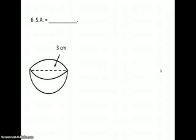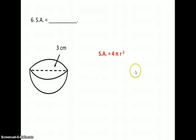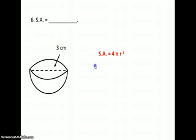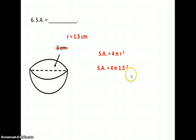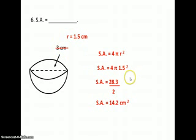Number 6: we're going to find the surface area of a hemisphere. We'll start with the surface area formula for a sphere, since that's the only formula we have, and then cut it in half at the end. We're given the diameter, so we cut that in half to get the radius, plug it into the formula, and that gives us 28.3 for the surface area of a sphere. The hemisphere would be divided by 2, giving us 14.2 square centimeters.